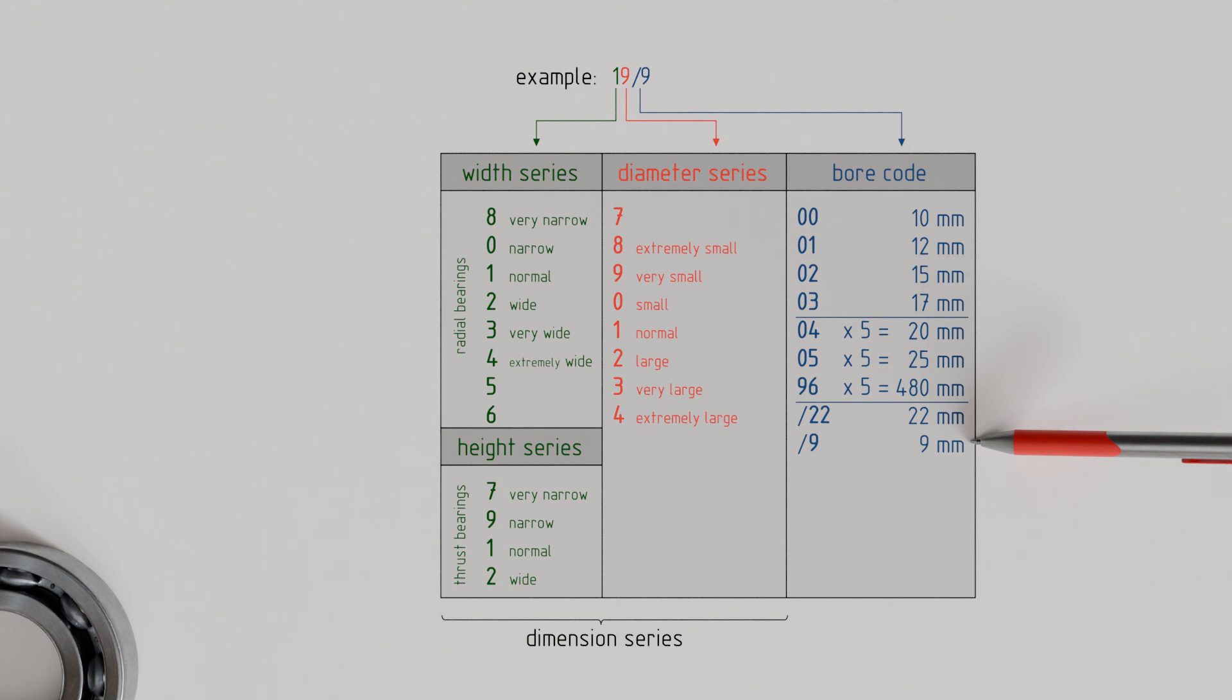For certain small deep groove ball bearings, spherical ball bearings, and angular contact ball bearings with a bore diameter of less than 10 mm, however, the diameter is written directly after the dimension series without a slash.